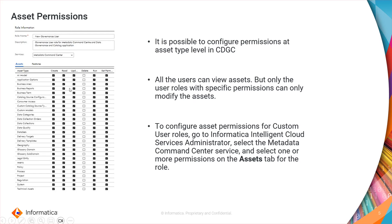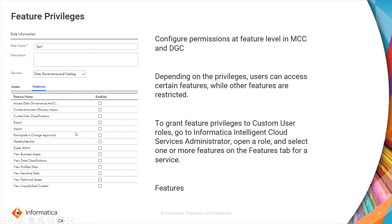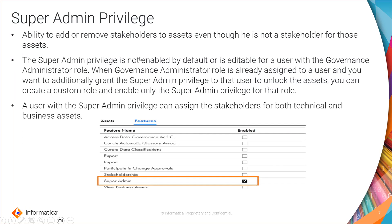This asset configuration is only available for custom roles — for predefined roles, these options are grayed out. Similarly, the admin can configure specific privileges for user roles in Data Catalog, Governance, and Metadata Command Center. You can select the services as per your need and then enable or disable the features. We also have super admin privileges.